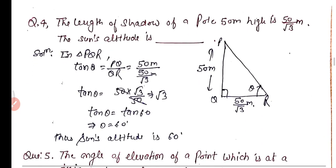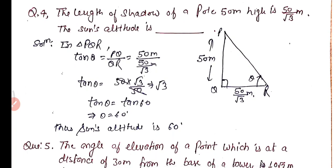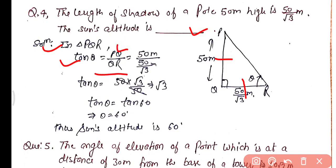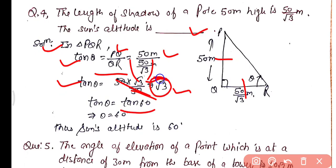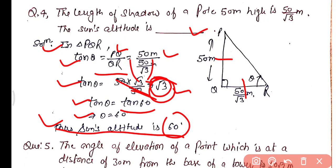Question number 4: The length of shadow of a pole 50 meter high is 50/√3 meter. Find the sun's altitude. In triangle PQR, tan θ = PQ/QR = 50/(50/√3) = 50 × √3/50 = √3. Since tan 60° = √3, we get θ = 60°. Thus the sun's altitude is 60°.